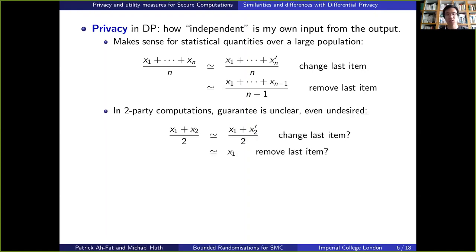In a two-party computation, however, this guarantee is less meaningful and might even be undesired. Indeed, when we compute the sum or the maximum of the inputs, you wouldn't want the output of the computation to be independent of one of the two inputs. That wouldn't be a sensible outcome.